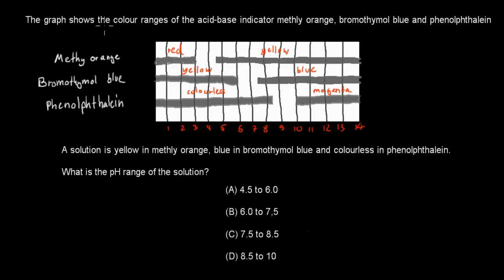Last but not least, the graph shows the color range of acid-base indicators, methyl orange, bromothymol blue, and phenolphthalein. Methyl orange, we have, don't worry again, when it comes to the size of the actual bars, ignore it, they're supposed to be all the same size, I just have bad drawing skills as usual. But we've got here, we've got red, we've got yellow, we've got yellow here, we've got blue here, we've got colorless here, and magenta here. So that's what these things at the top say, methyl orange, bromothymol blue, and phenolphthalein. A solution is yellow in methyl orange, blue in bromothymol blue, and colorless in phenolphthalein.